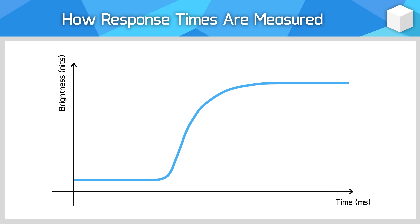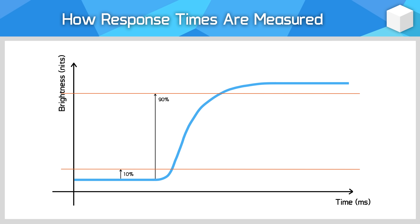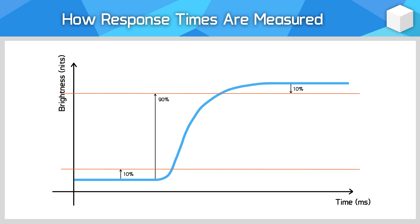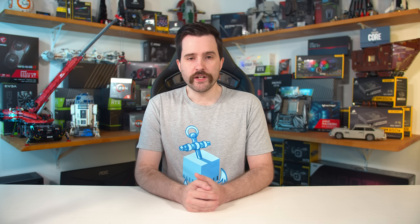In between is the transition period, which we want to be as close to zero as possible. Generally in engineering when you measure a rise or fall time — this being a rise time — you use the 10-90 rule. That is to say you start measuring the rise time when the output reaches 10% of its final value, and you stop measuring when it reaches 90%. The rise time, or response time in the case of a monitor, ends up being the time difference between these two points.